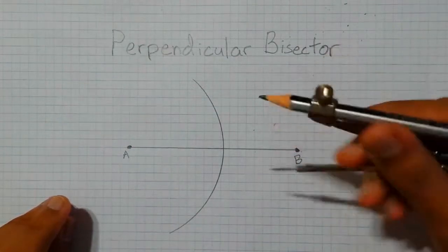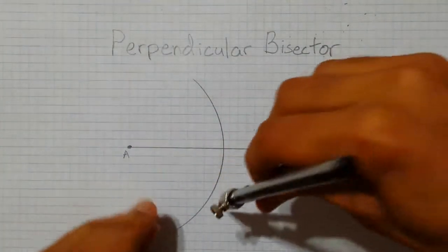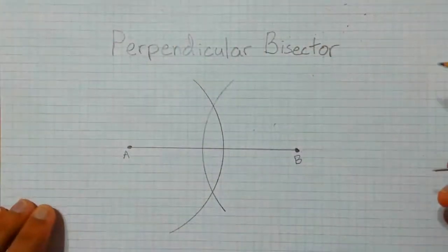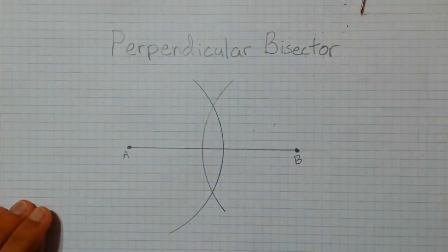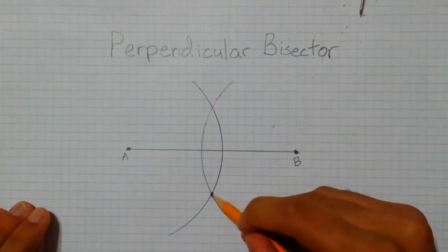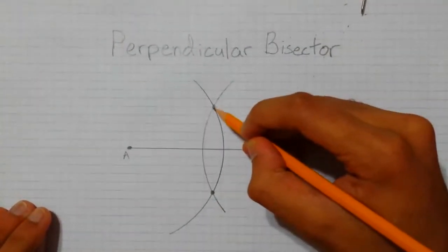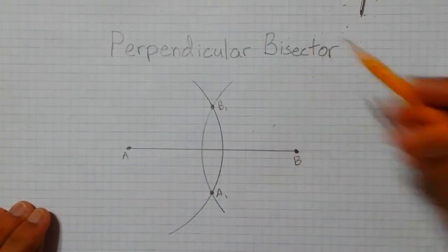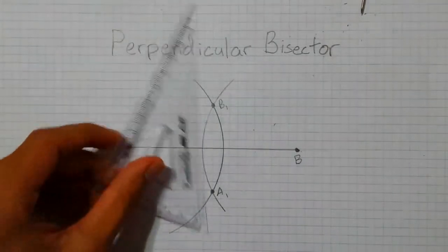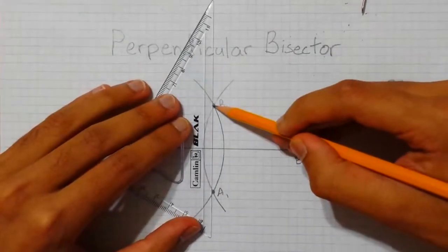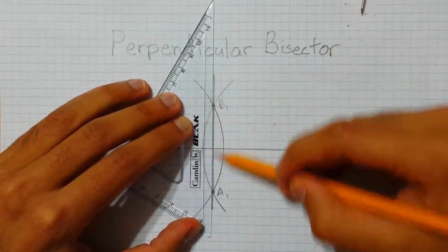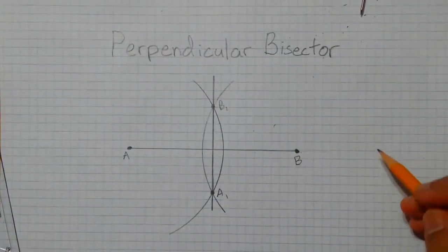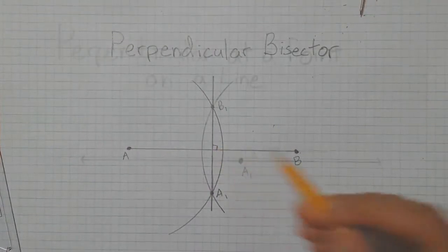Then we will repeat this same process on the other side. The intersection of these two arcs gives us two points. We will call these points A1 and B1. Then using our straight edge, we can connect these two points, and that forms the perpendicular bisector of line segment AB, forming a 90 degree angle.